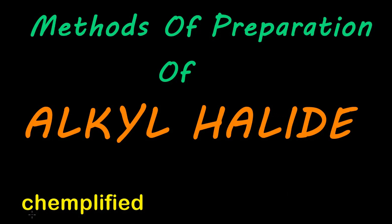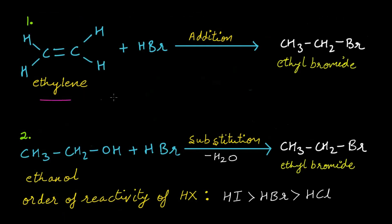Hey guys, this is Camplified and in this video we will talk about methods of preparation of alkyl halide. The first method is when ethylene is treated with HBr, addition reaction takes place and you will get ethyl bromide as your product. In place of HBr you can use HCl or HI.